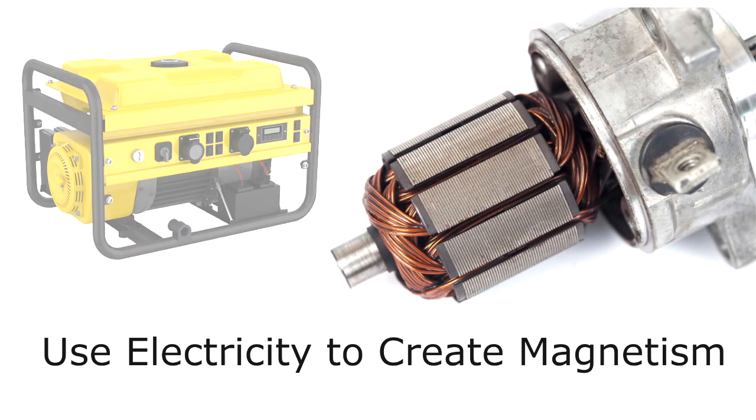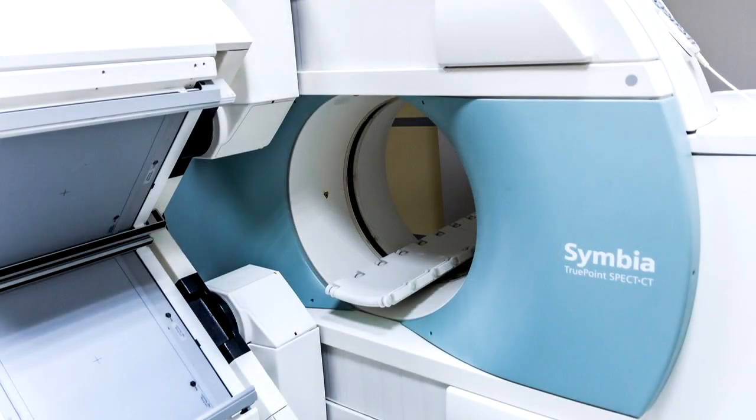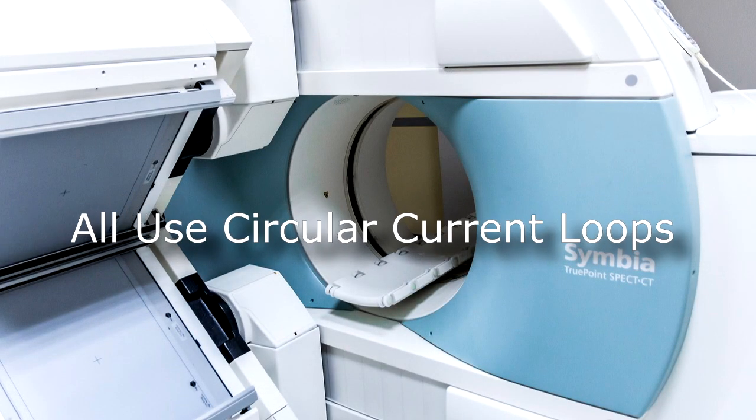Many electrical devices like motors, generators, relays, solenoids, loudspeakers, hard disks, MRI machines, they're all using circular current loops to create magnetic fields.